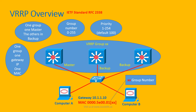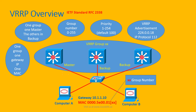You can configure the priority for each layer 3 switch or router in the group, with a priority range from 1 to 254 and the default is 100. VRRP advertisement uses the multicast address 224.0.0.18 using protocol 112. The master and backup layer 3 switches or routers communicate with each other using this multicast address to check each other's status.